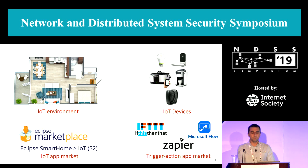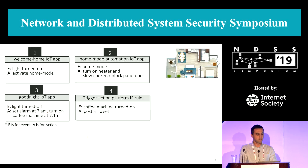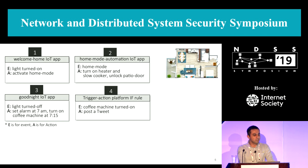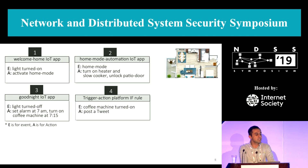To illustrate, consider a user who wants to create custom automations using a set of IoT devices. She installs apps from an IoT trigger-action platform marketplace. The first IoT app activates home mode when the light switch is turned on. The second turns on the heater, slow cooker, and unlocks the patio door when home mode is activated. The third sets the alarm and turns on the coffee machine at a specific time when the lights are turned off. She also installs a trigger-action app — platforms such as IFTTT, Zapier, or Microsoft Flow allow users to connect IoT devices with digital services. One such app posts on social media when the coffee machine is turned on.